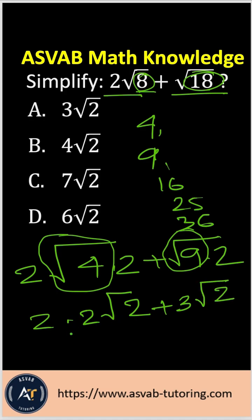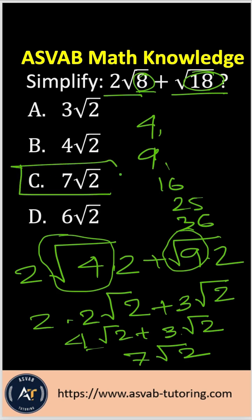So now you have 2 times 2 is 4√2, plus 3√2. Now if you add them up, you need to add outside of the square root. That gives you 3 plus 4 is 7√2, so the correct answer is option C.